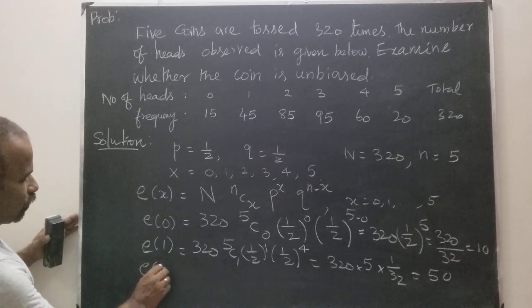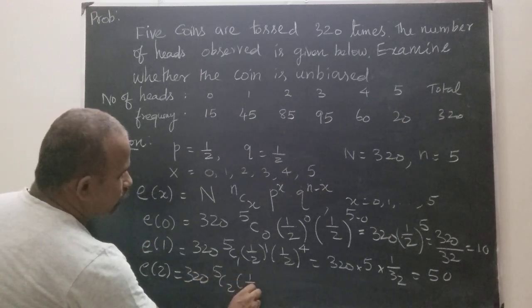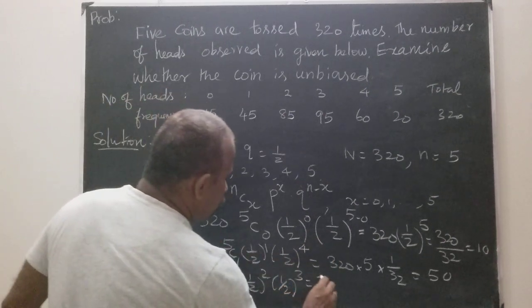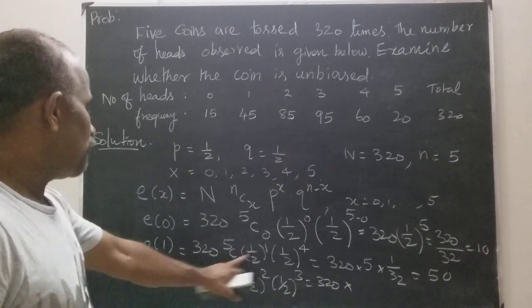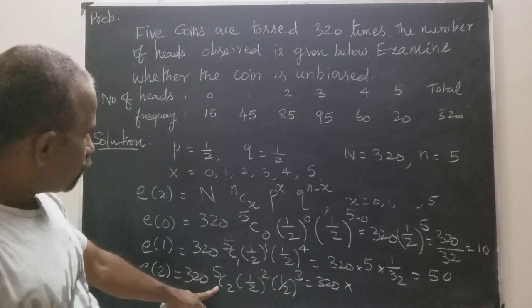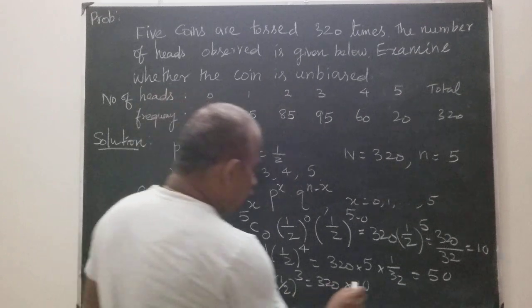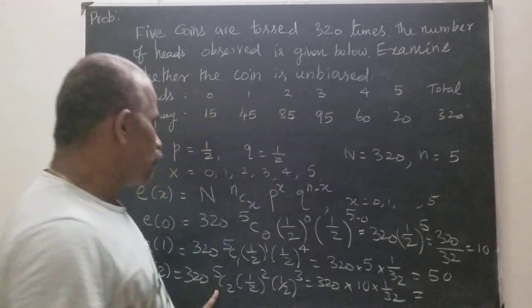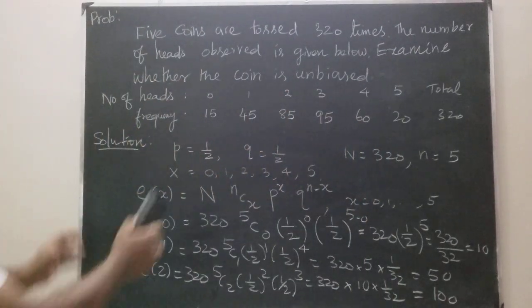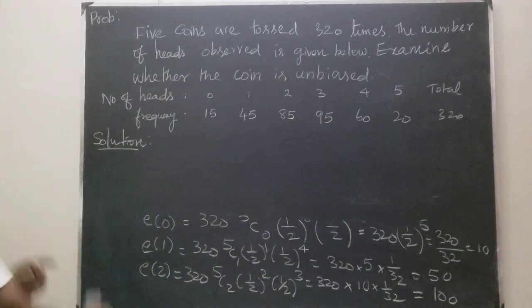E(2) = 320 · 5C2 · (1/2)^2 · (1/2)^3. 5C2 = 10. So E(2) = 320 · 10 · (1/32) = 10 × 10 = 100. Therefore E(2) = 100.